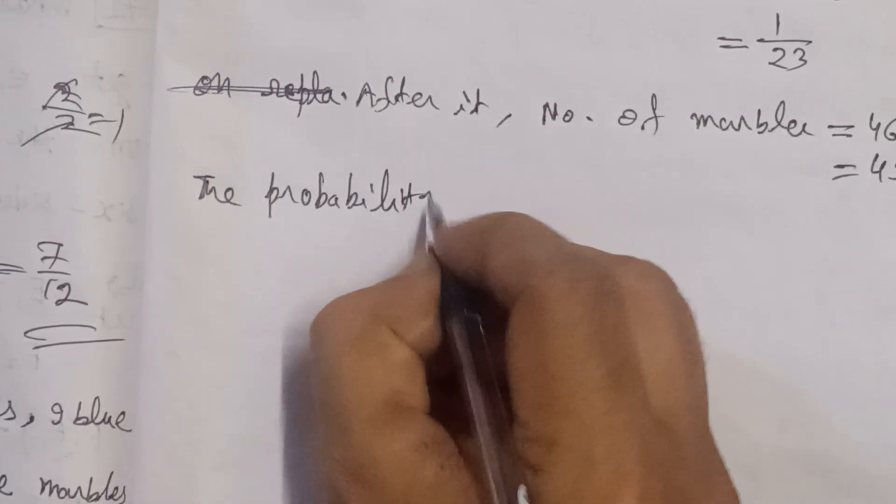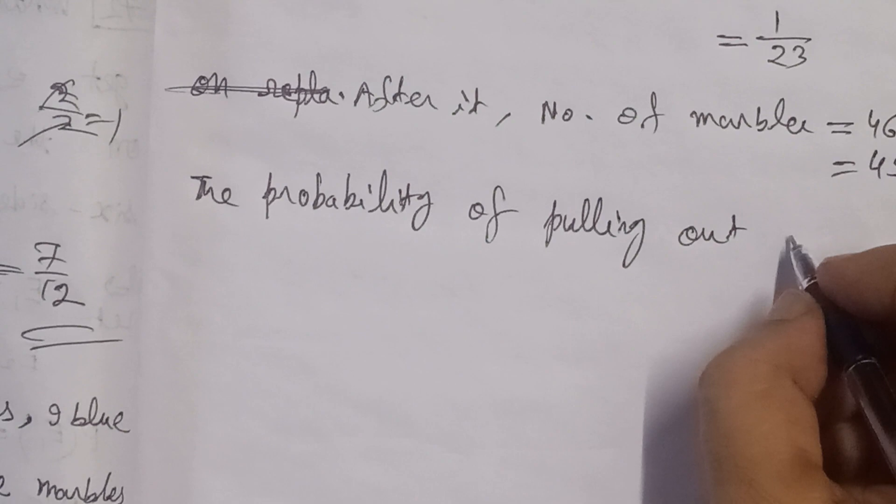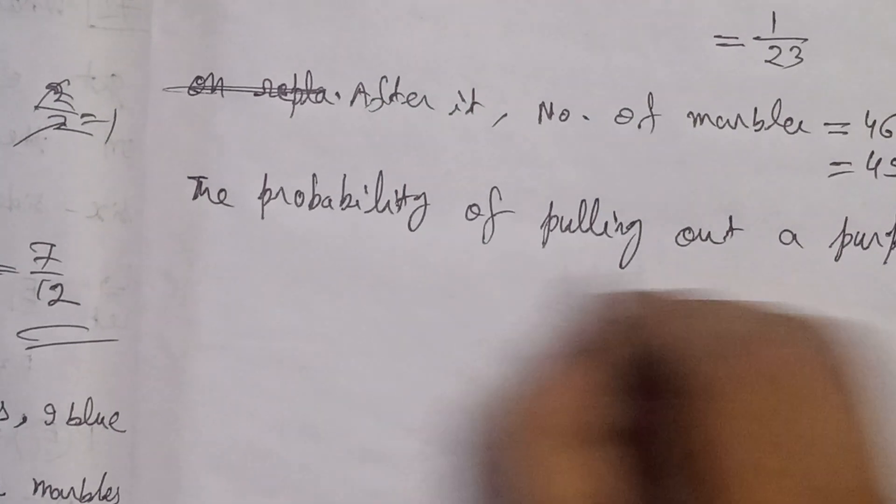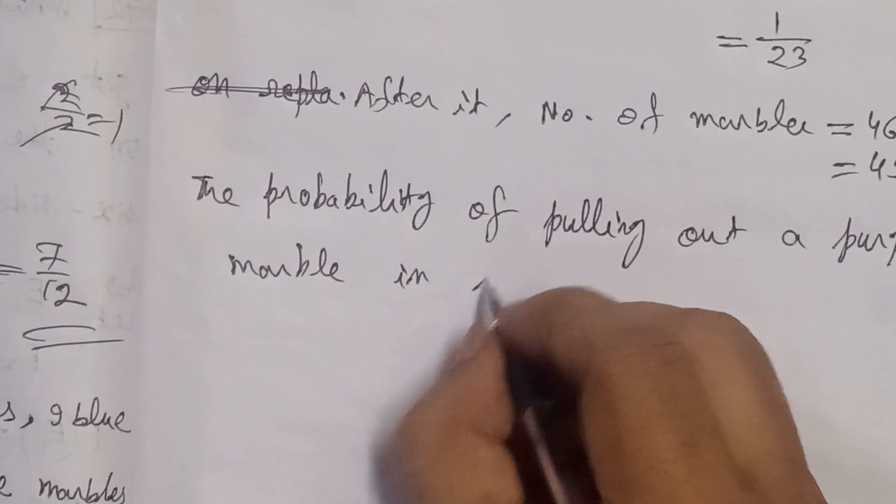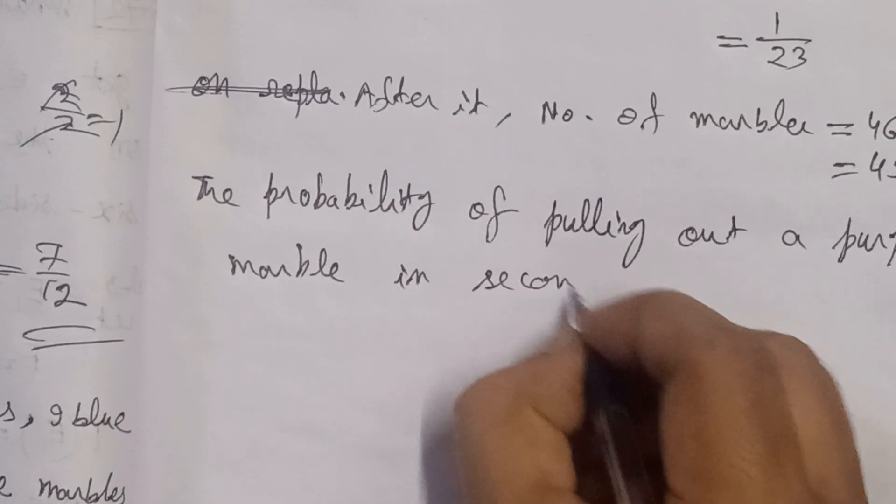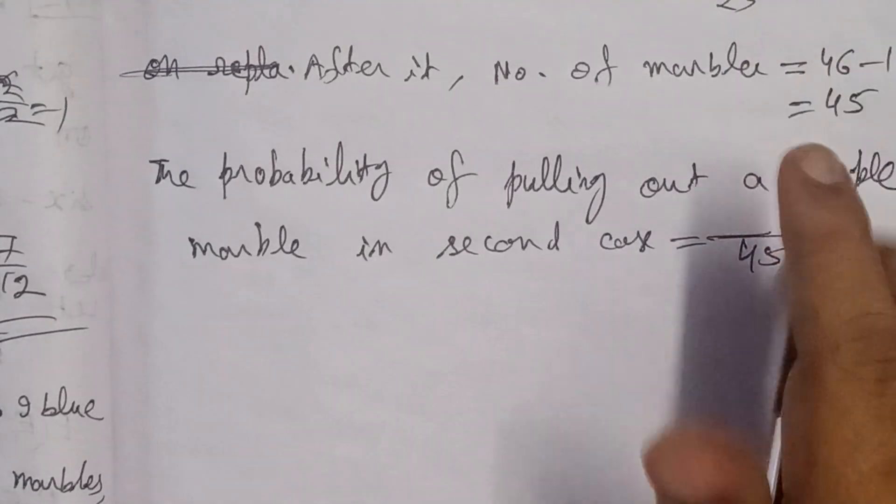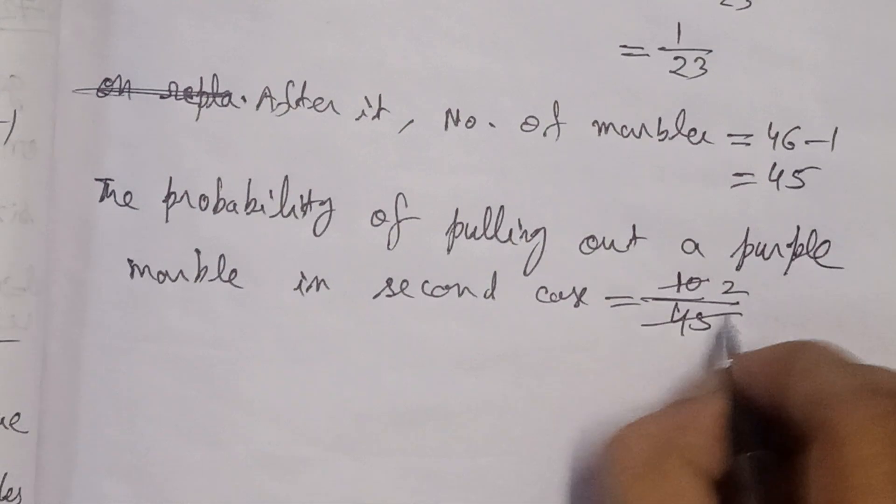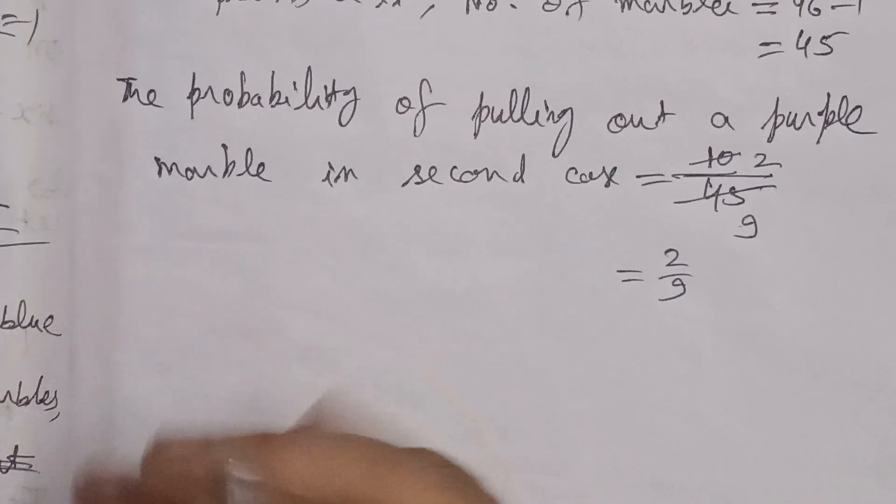Now we have 45 marbles in total. From those, purple marbles are 10. So it's 10/45. We can simplify this by dividing by 5: both numerator and denominator, giving us 2/9.